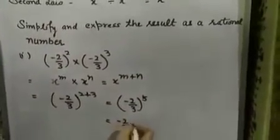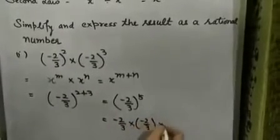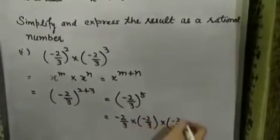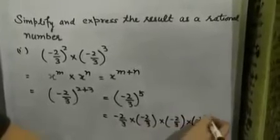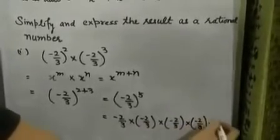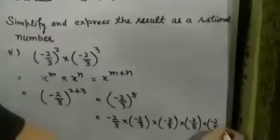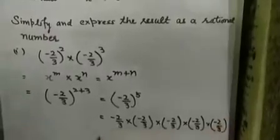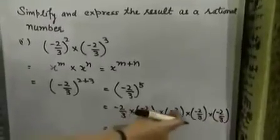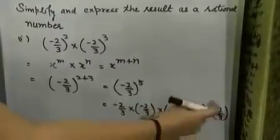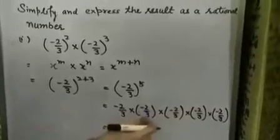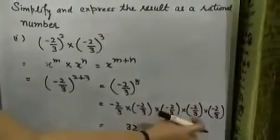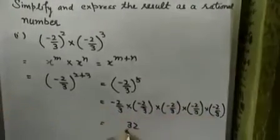Minus 2 by 3 multiplied by minus 2 by 3 multiplied by minus 2 by 3 — 5 times we have to multiply. Multiplying the numerator: 2 twos are 4, 4 twos are 8, 8 twos are 16, 16 twos are 32. Multiplying the denominator: 3 threes are 9, 9 threes are 27, 27 threes are 81, 81 threes are 243. So the result is minus 32 by 243.